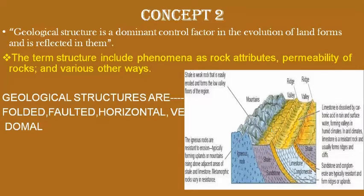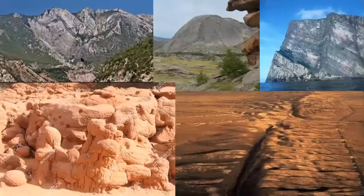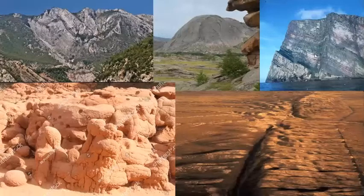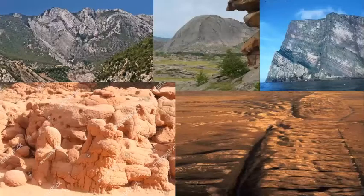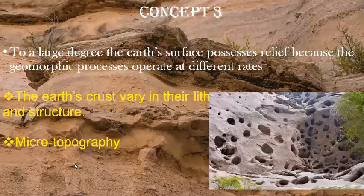A rock may be resistant to one process but non-resistant to another under various kinds of climate. Specific geological structures — whether folded, faulted, horizontal, domal, or vertical — will result in their own specific topographic features. A folded topography won't be the same as a domal, horizontal, or vertical topography. Each kind of rock structure has its own lithology and landforms.